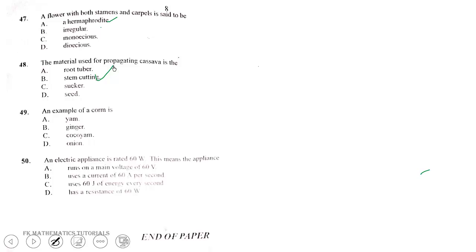Question 49. An example of a corm is onion. Question 50. An electric appliance is rated 60 watts. This means the appliance uses 60 joules of energy every second. The correct answer is C.